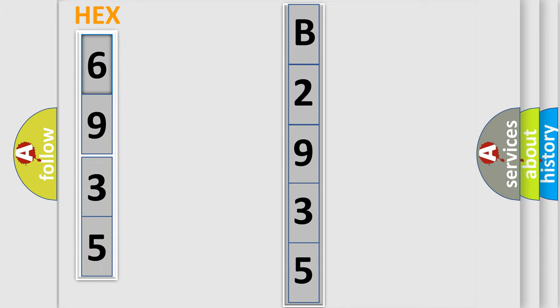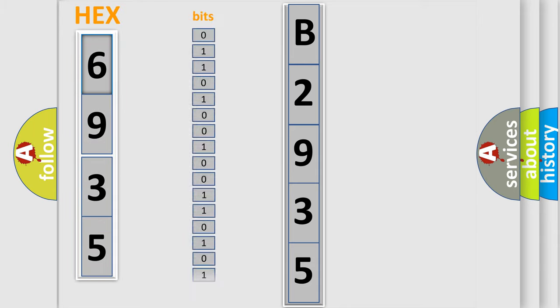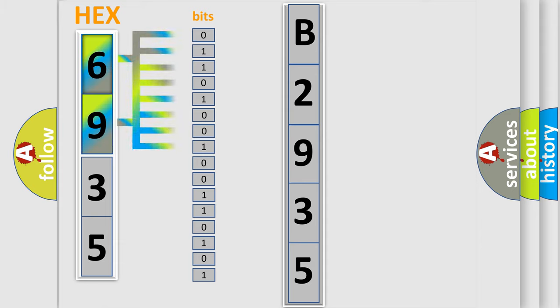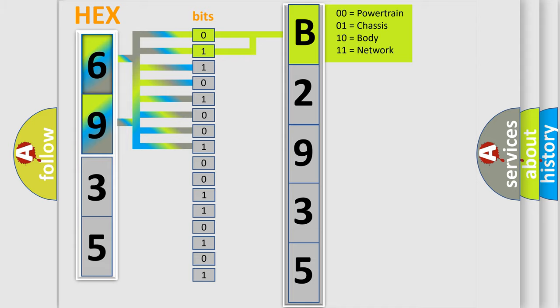The error code is split into two bytes consisting of 16 bits. One bit is the basic unit that each computer works with. The bit has two logical states: zero (low level) and one (high level). By combining the first two bits, the basic character of the error code is expressed.